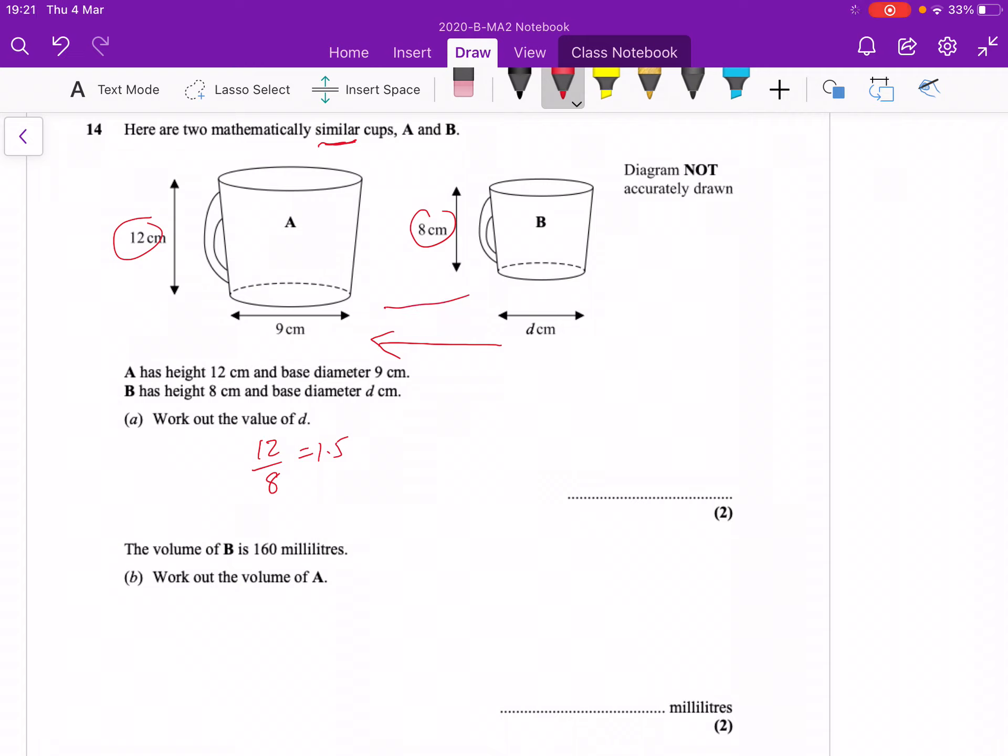If we're coming back the other way to find out what D is, we need to do 9 divided by the scale factor. When I come back the other way, divided by 1.5 comes out to be 6. Now that scale factor is for the length.